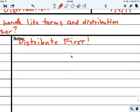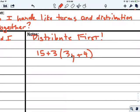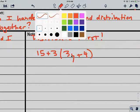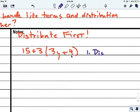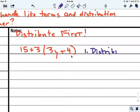If I have an equation like 15 plus 3 times 3y plus 4, I should deal with the parentheses or the distribution first. So I'm going to take care of that. So 1, distribute. I'll do 3 times 3 and 3 times 4. So I get 15 plus 9y plus 12.